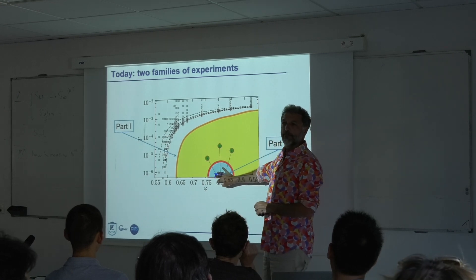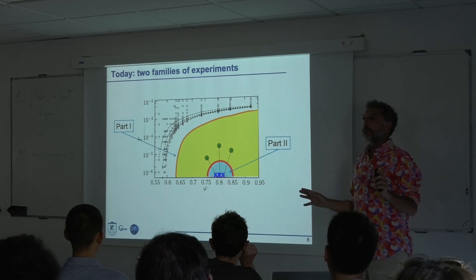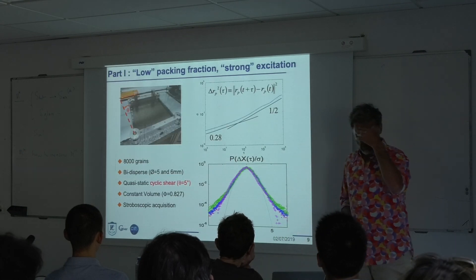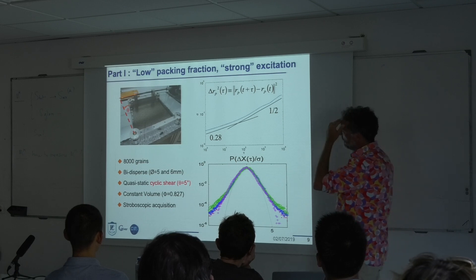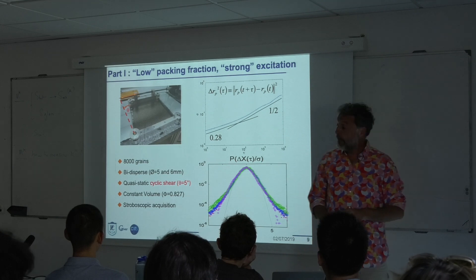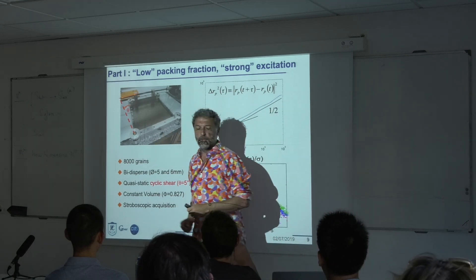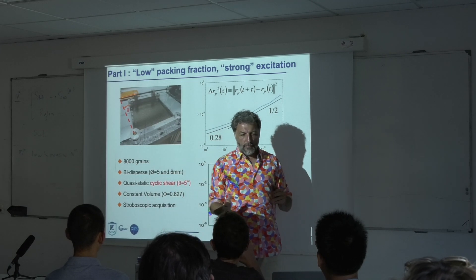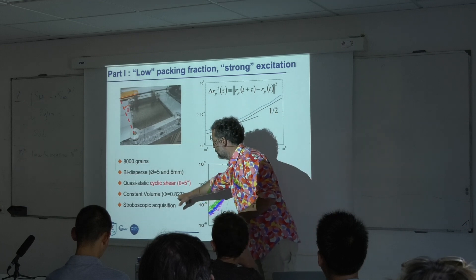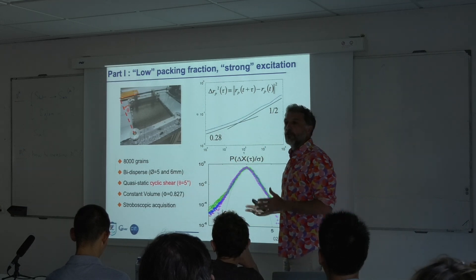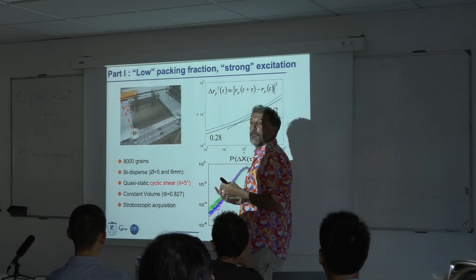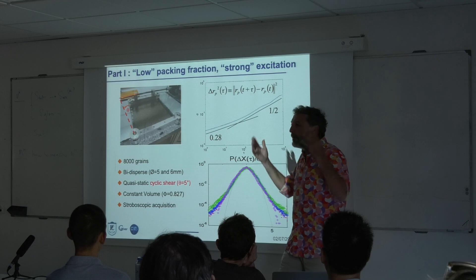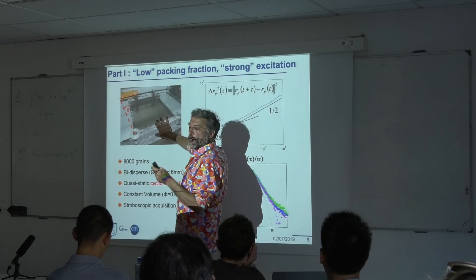Let's start with the first experiment, done at Saclay. We had very hard metallic disks placed in a cell, compressed to a packing fraction of about 0.82 — nothing moves. We wanted to explore configurations around this one. This is really a random configuration — no equilibration of any kind, just a packing amongst all possible packings. And for some reason, we decided to do this by shearing the packing a little bit and then coming back to the original angle.